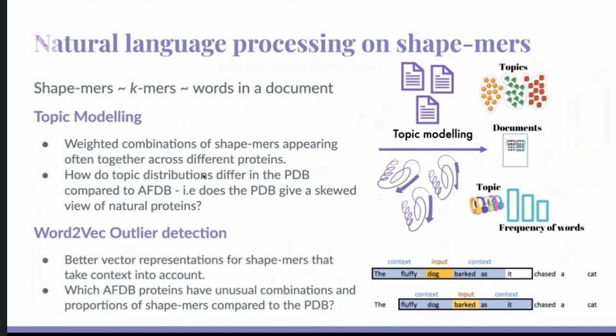And so if you do the same thing for the protein structures, essentially you come up with combinations of shape-mers that appear more often together across different proteins. And then from these topics, I want to see how is it different in AlphaFold compared to the PDB. And so yeah, I think this is what I'm aiming for, is that the PDB gives a skewed view of natural proteins. And this we sort of knew to be true, because of course people crystallize things that they are interested in or studying, things that are easy to crystallize. And so there is some bias in terms of what kinds of structures are present in PDB. And then the second step is outlier detection. So here I essentially make an embedding for the whole protein, and then see if AlphaFold proteins are structural outliers compared to PDB proteins.